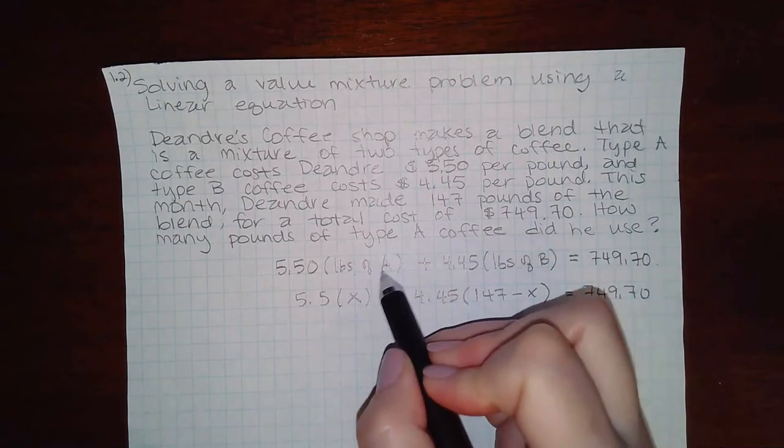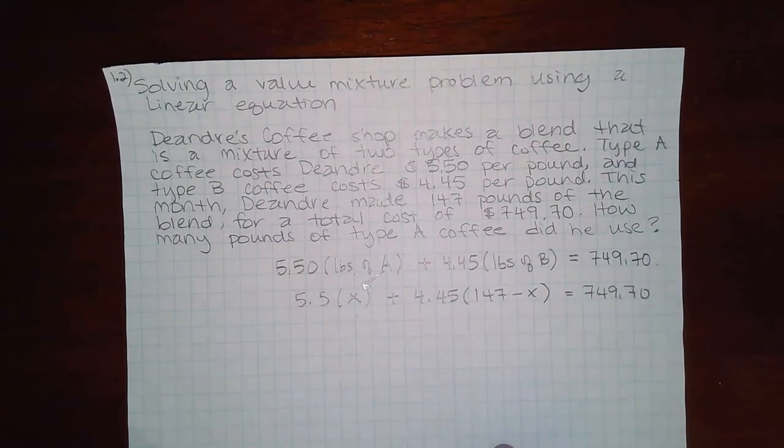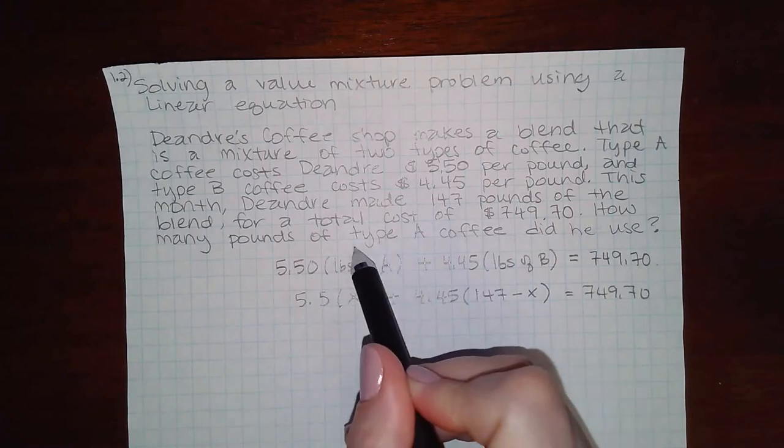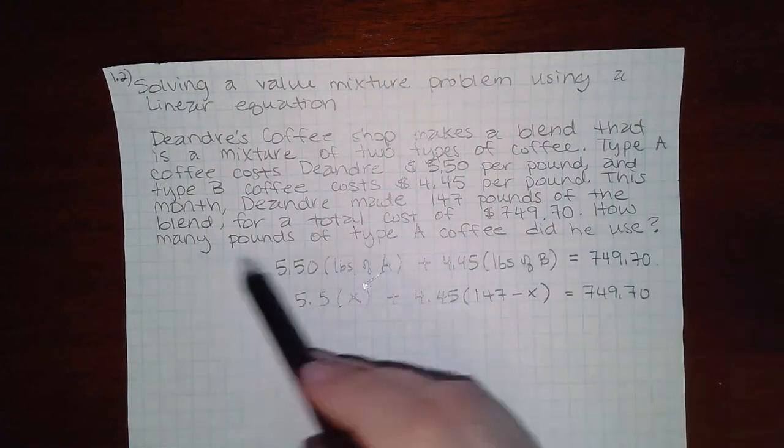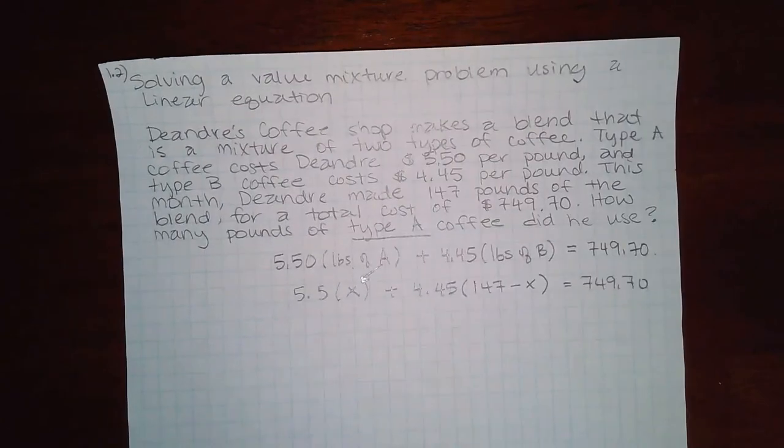So remember, type A is the X. So when I'm finished and I have X in or something, I'm going to have what type A is. And that's why I used X for A, because it said find how many pounds of type A did he use. So you want X to equal A in this case.